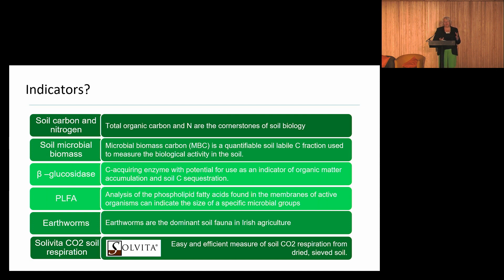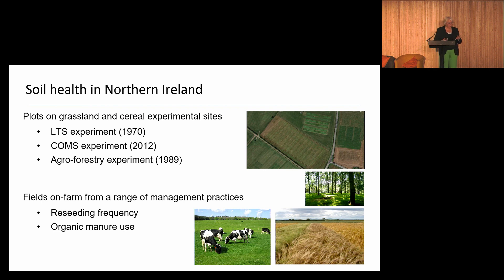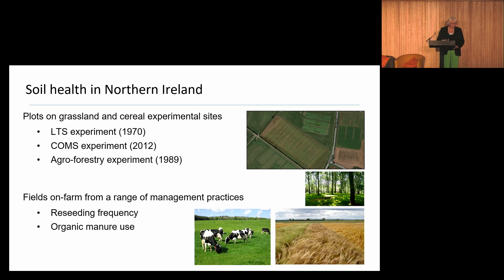If you think about the requirements for indicators — they need to be responsive to change, easy to do, relevant to soil health — it's very hard to find one indicator for soil biology that fits all of those. What we did was deploy all these indicators across a range of grassland and cereal experimental sites. We have the long-term slurry trial in Hillsborough from 1970, an agroforestry experiment, and on-farm measurements across a range of management practices — looking at reseeding frequency for grassland and organic manure use for arable.